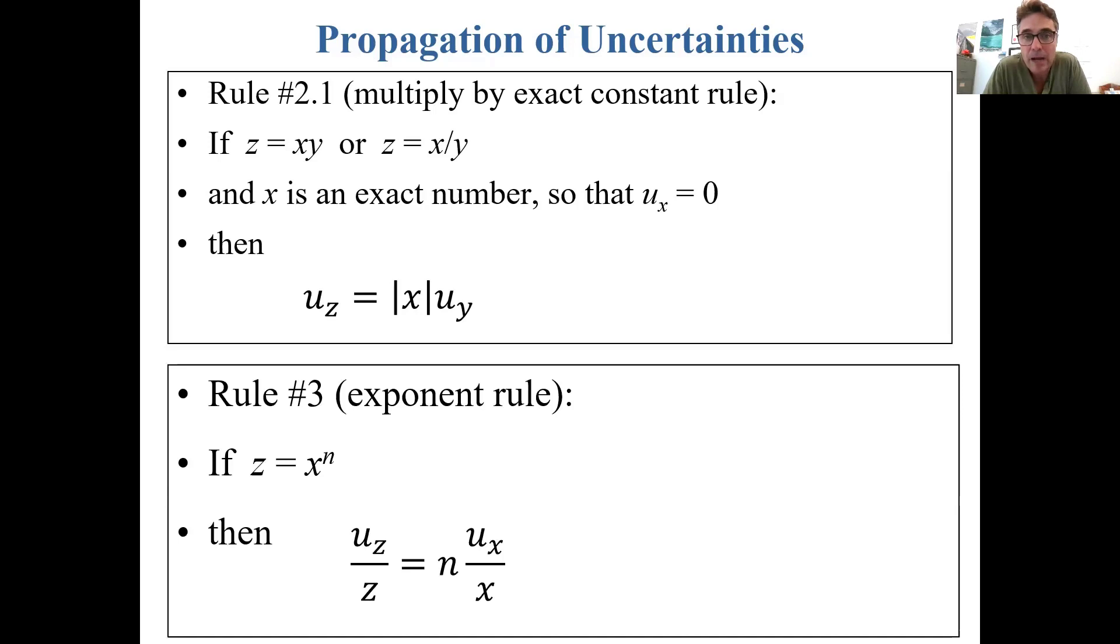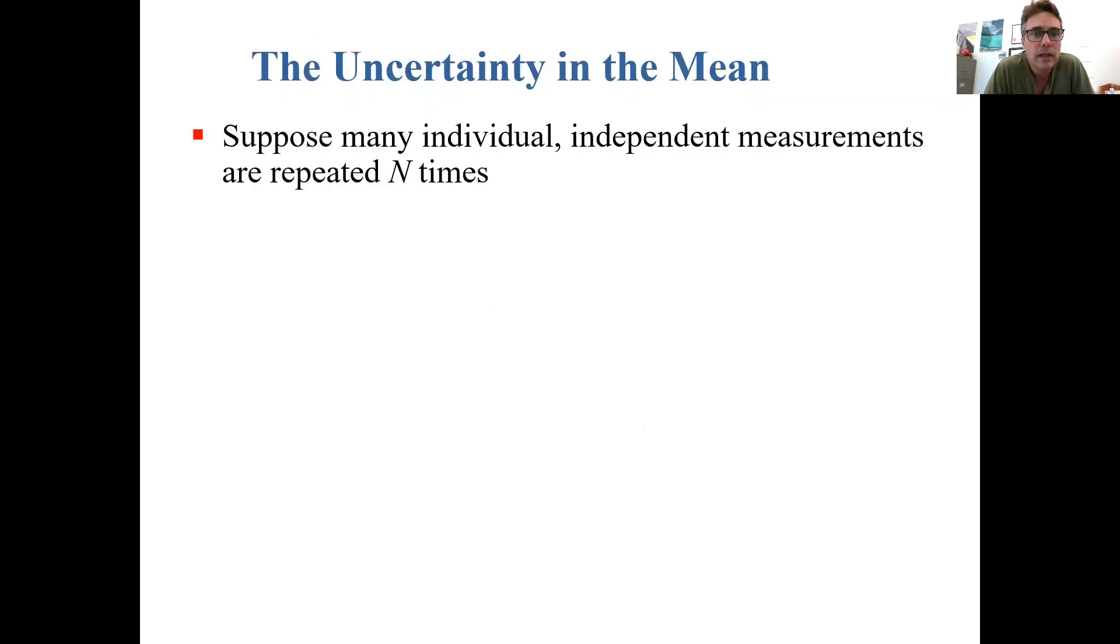And then there's the exponent rule. If z is x to the power n, then the fractional uncertainty in z is equal to n times the fractional uncertainty in x.